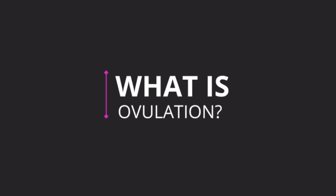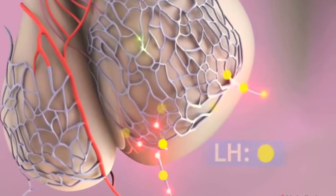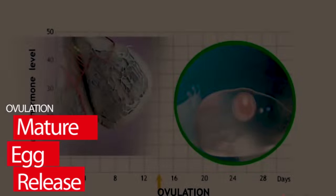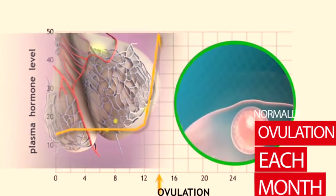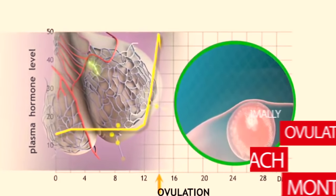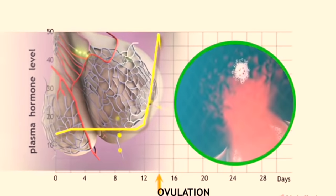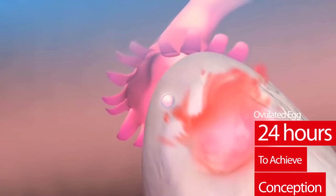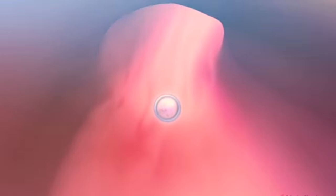So, what is ovulation? Ovulation is the release of a mature egg from one of the ovaries. In a normal menstrual cycle, this happens each month. Ovulation is the fertile time frame in the female cycle, but it is a time-sensitive process as the ovulated or released egg only has up to 24 hours in order to achieve successful conception.